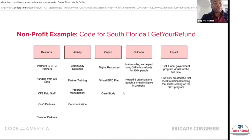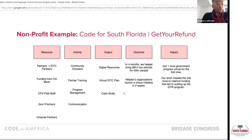Get Your Refund is a service that makes it easier for people to file for taxes, with community partners following up with each person to make sure they have all their information to file and get their refund. In terms of activities, we had all the relationships with the community that Code for America nationally didn't, so our activity included community outreach about the tool, updates on new things, and partner training. In Miami we have a unique demographic — people speak English, Spanish, and Haitian Creole — so facilitating training through our multilingual staff was critical.